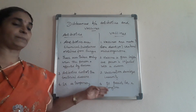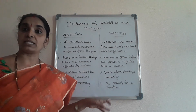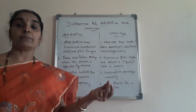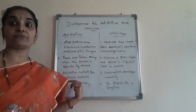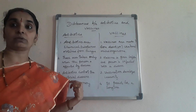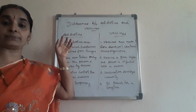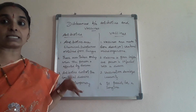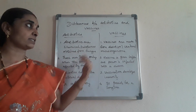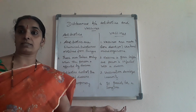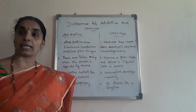You can write examples for both vaccines and antibiotics. Antibiotics include streptomycin and aureomycin — Dr. Yellapragada Subbarow developed streptomycin and aureomycin for various bacterial diseases. For vaccines, you can write smallpox vaccine, polio vaccine, and rabies vaccine as examples.